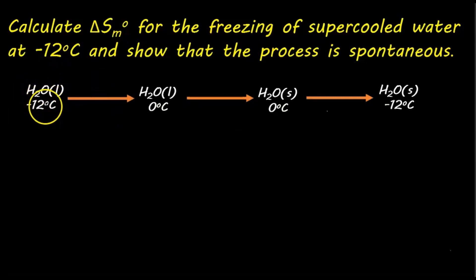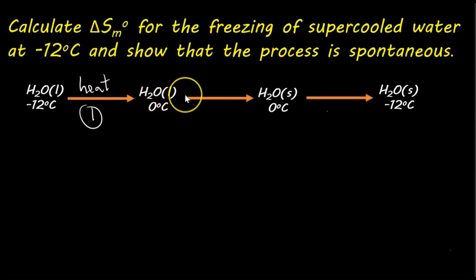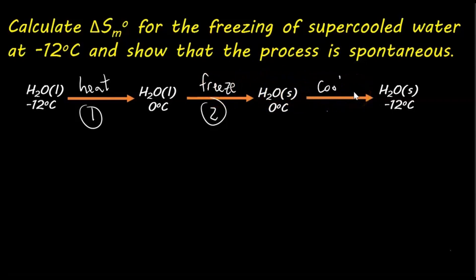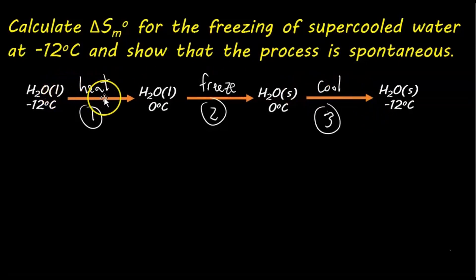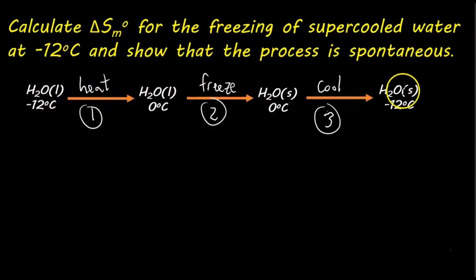We'll start off with a liquid at negative 12 degrees Celsius and then heat it up — that's step one — to the liquid at zero degrees Celsius, its normal freezing point. Then in step two, we freeze the liquid into a solid. And in step three, we cool that solid back down to negative 12 degrees Celsius. We can regard each step as a reversible process, and since entropy is a state function, the change in entropy along this reversible path equals that of the irreversible spontaneous freezing.